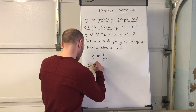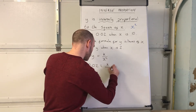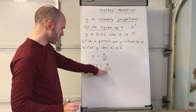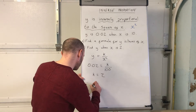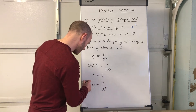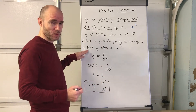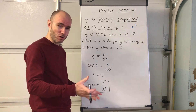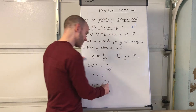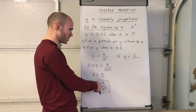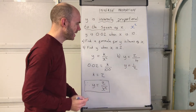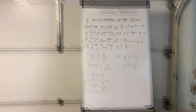So y is 0.02 and x is 10. Fill those in — remember to square 10, so 10 squared is 100. Then 100 times 0.02 gives k equals 2. Therefore y equals 2 over x squared — that's the formula for the rest of the question. For part b, find y when x is 2: y equals 2 divided by 2 squared. Two squared is 4, so y equals 2 over 4, which simplifies to y equals one half.